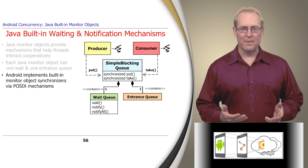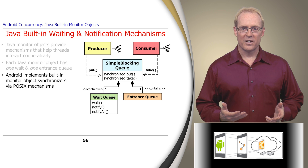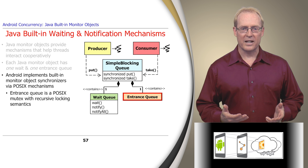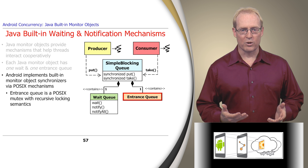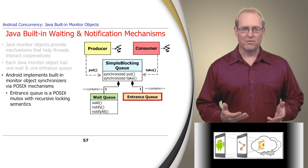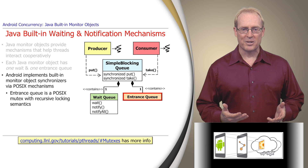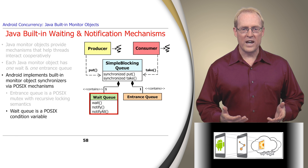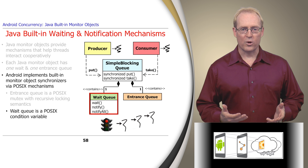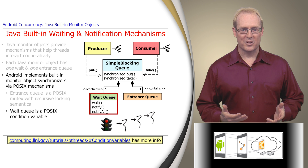Android's Java Virtual Machine implements built-in monitor object synchronizers via POSIX mechanisms. For example, an entrance queue is implemented as a POSIX mutual exclusion, or mutex lock, augmented to support recursive locking semantics, which protects shared data from race conditions. A wait queue is implemented as a POSIX condition variable, which allows one or more threads to block on the wait queue of a monitor object until some condition becomes true.